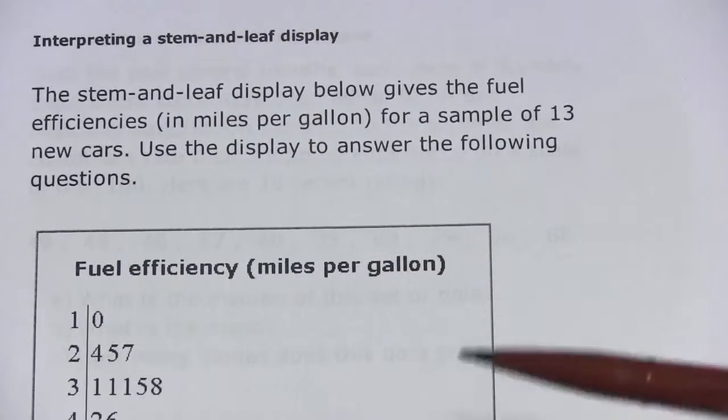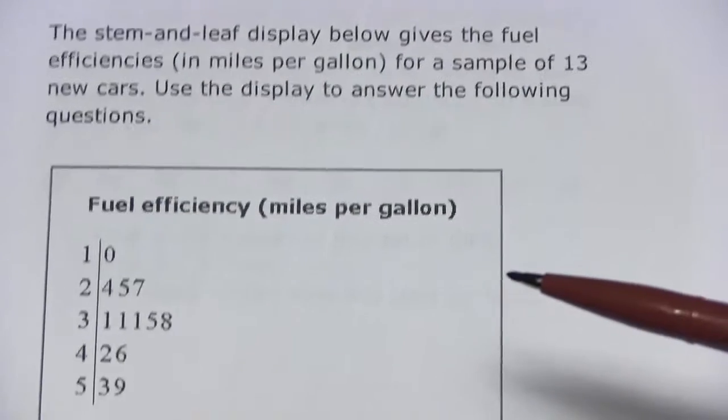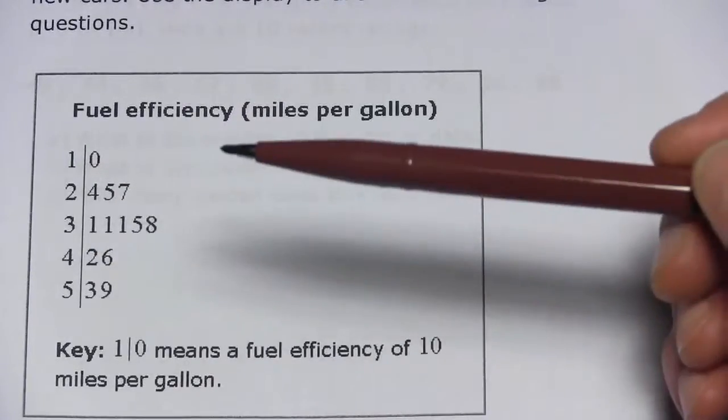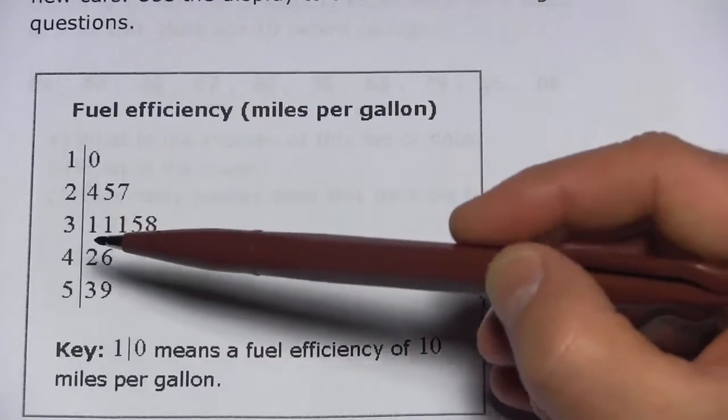In this problem, we're being asked to interpret a stem and leaf display, and let me show you how this works. This is a data set, a set of numbers, and there's a vertical line down the middle.